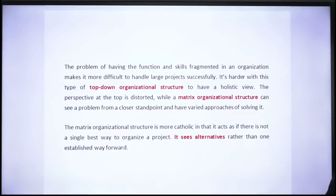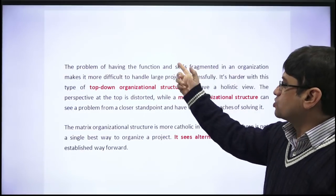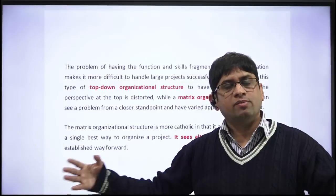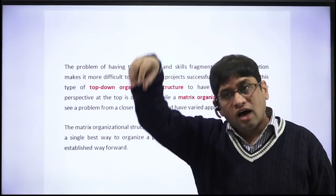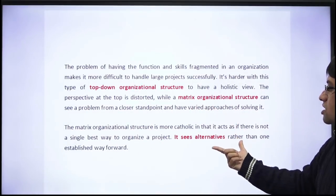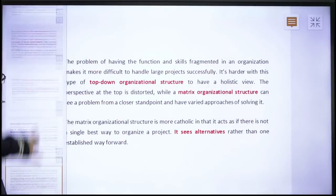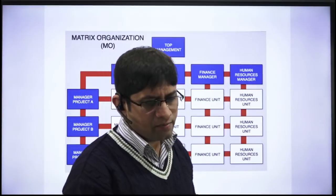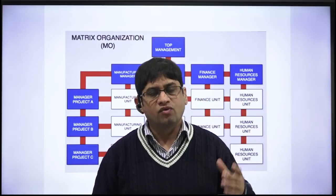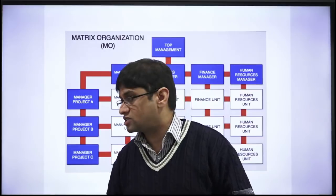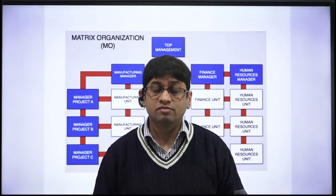The problem of having functions and skills fragmented in the organization makes it difficult to handle large projects. Indian Railways faced trouble handling very large projects because of the top-down hierarchical vertical structure. But now they are replacing it with a matrix organizational structure, which avoids those conventional structural problems. I'm sure what we have discussed about matrix organization structure — advantages, disadvantages, and why we need it — is more than sufficient. Practice questions will be uploaded soon. Best of luck for your exams!